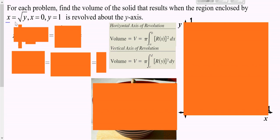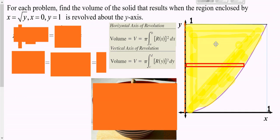For this problem, an easier way to graph is to square both sides and get y equals x squared. You also have the y-axis and a horizontal line at height one. Graph that and notice we're not dealing with the second quadrant — we're getting positives out of your root, so x is only positive and we're in the first quadrant. It's a vertical axis of revolution going around the y-axis, so we're dealing with y's.